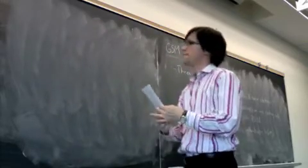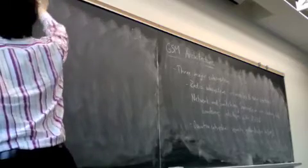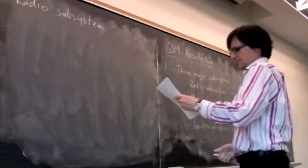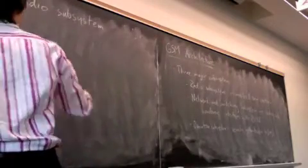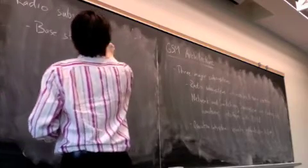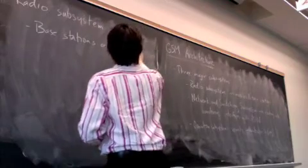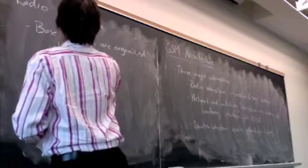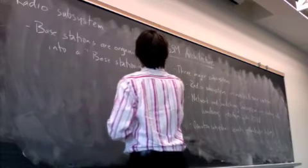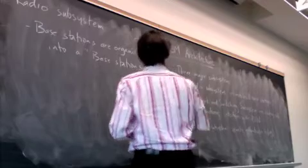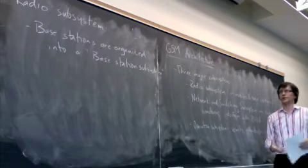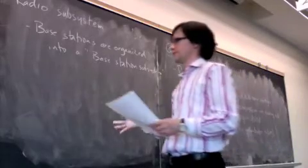So the radio subsystem consists of three major components. Well, actually, let me first say base stations are organized into a base station subsystem. So rather than having individual base stations as their own autonomous units, what GSM does is it organizes them into a hierarchy. An individual base station subsystem will consist of several base stations.